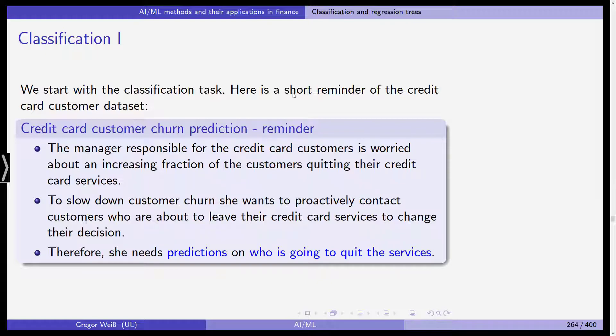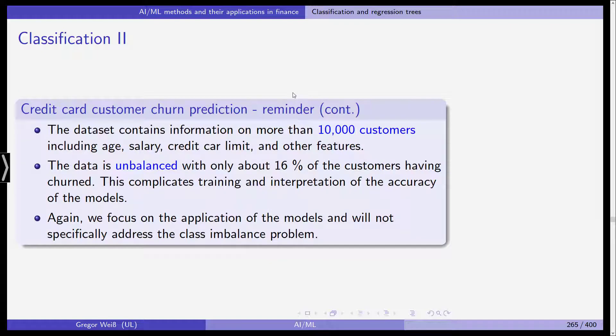As the manager, you're responsible for looking out for the customers and you are worried that an increasing number of customers quit your services and terminate the contract, and you want to slow down customer churn. You want to proactively contact customers who are about to leave their credit card services to change their decisions. You're trying to actively influence the behavior of your customers based on a prediction of whether they are likely to terminate the contract. Therefore, the manager needs predictions on who is going to quit the services.